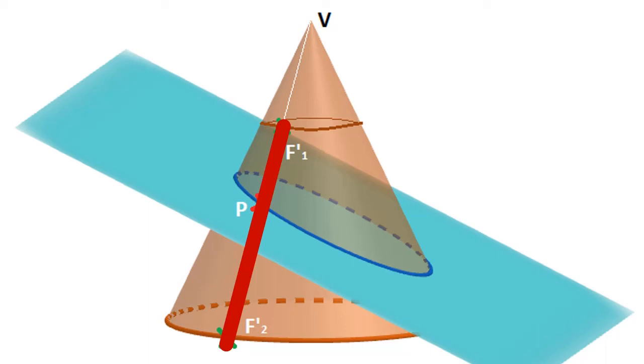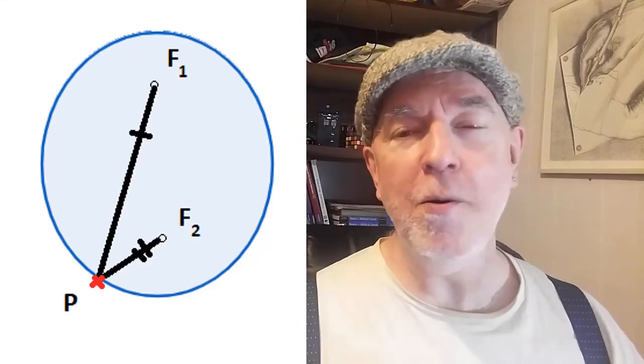But that length F1 prime and F2 prime is always going to be the same. But those two points correspond to F1 and F2 which are the focuses of the ellipse.